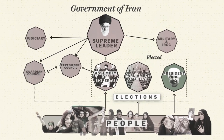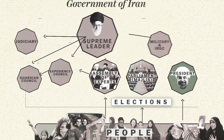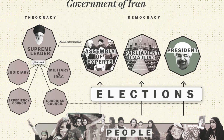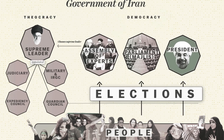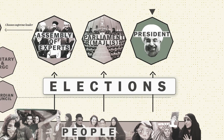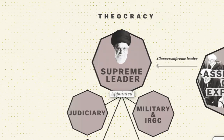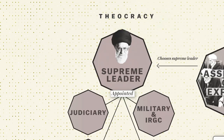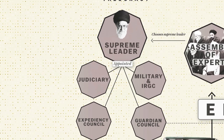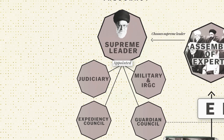There's a real tension between those two systems. Iranians elect, more or less democratically, the president, the parliament which is called the Majles, and a really important body called the Assembly of Experts — we'll get to that later. At the same time there's the unelected theocracy: the supreme leader, the judiciary, the military, and others.